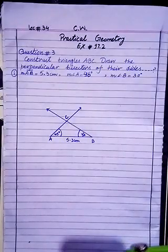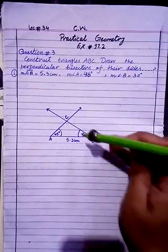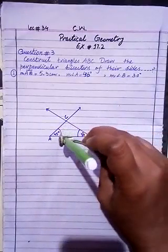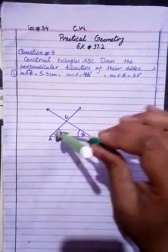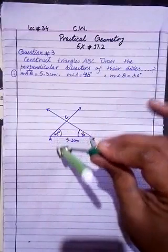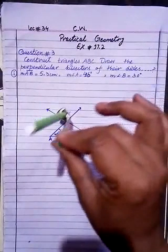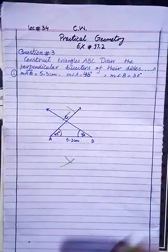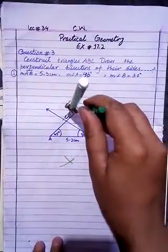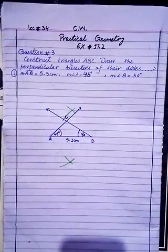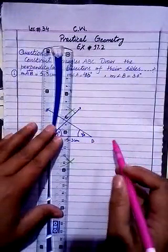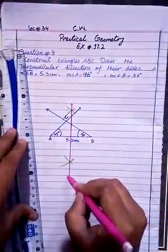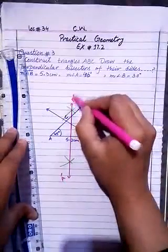First of all you have to bisect side AB. Open the compass to more than half of AB but less than the full length — more than 2.6 cm but less than 5.3 cm. Put the compass at point B and draw arcs above and below. Now put the compass at point A and draw arcs above and below. If the arc is too small to intersect, extend it. Join the two intersection points with a scale. This is the perpendicular bisector of AB — name it A dash and B dash.